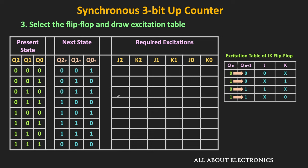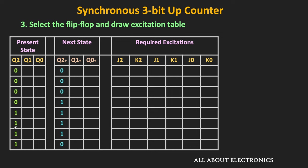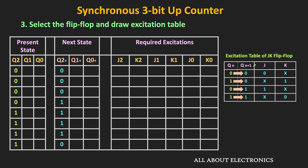Let us consider the Q2 column first. For a 0-to-0 transition, J should be 0 and K should be X. For a 0-to-1 transition, J should be 1 and K should be X. For a 1-to-1 transition, J should be X and K should be 0. For a 1-to-0 transition, J should be X and K should be 1. In this way, we get all the required excitations for J2 and K2.